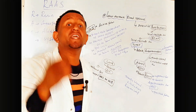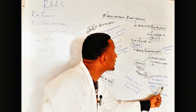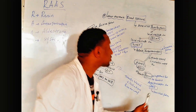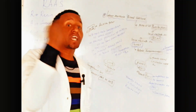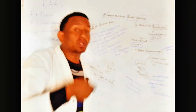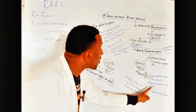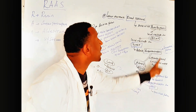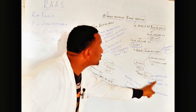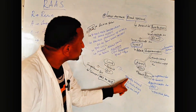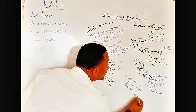What is the use of renin? Renin is important to convert angiotensinogen to angiotensin I. Angiotensin I is the inactive form. Through blood circulation, angiotensin I reaches to the lung.